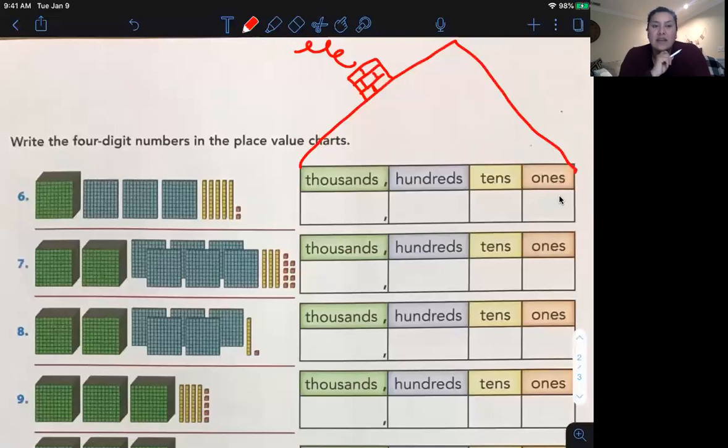All right. Are you up for this challenge? Look at number six. You're going to write four digit numbers in the place value chart. Remember, if they don't give you a number in the ones, or if they don't give you a number in the tens, what's the number that you write that doesn't really mean anything? Zero, right? Okay, good. All right. Let's look at number six. Let's read that together. How many thousands are there? One. Very good. How many hundreds are there? One, two, three. Three hundred. How many tens? One, two, three, four, five tens, which means 50. Because if we're counting by tens, that would be 10, 20, 30, 40, 50. Very good. And how many ones? One, two. Awesome.